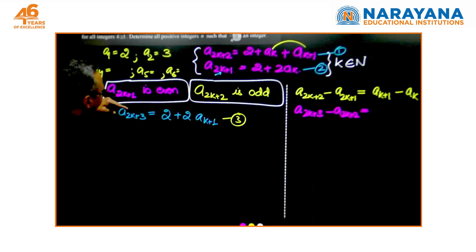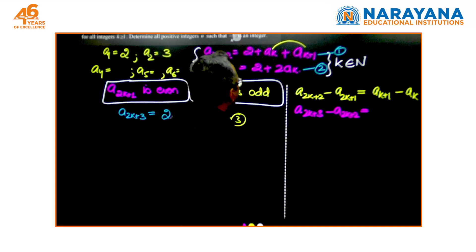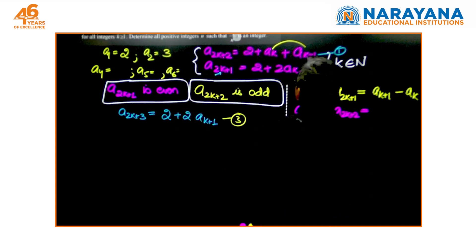I am subtracting 1 from 3. So a2k+3 minus a2k+2, I realize this becomes ak+1 minus ak, which are the connecting link.